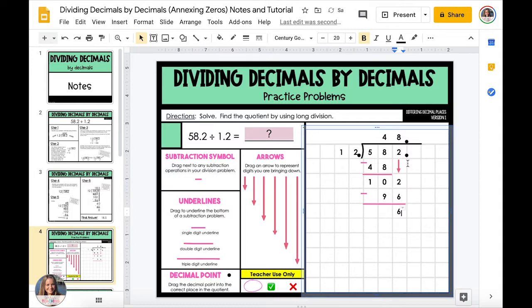Since we don't have a digit to bring down in our dividend we're going to add a digit. Now we don't want our dividend to change its value, so in order to have another digit but keep 582 worth the same amount, we're going to add a zero to the right of our decimal point.